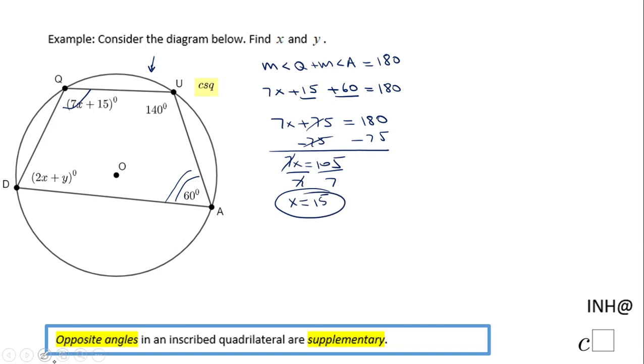Now I need to find y, and for that reason I'm going to look at the other pair of opposite angles, which are angle D and angle U. If you notice, these are opposite angles also, so we can write pretty much the same statement.